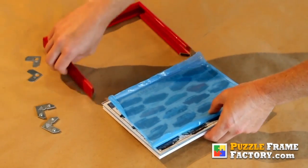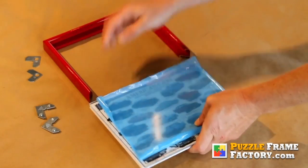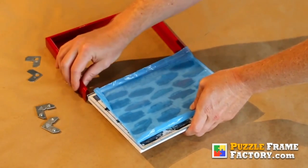Once I've peeled away the film from the lens cover, I slide in the backing, cover, and puzzle all together.